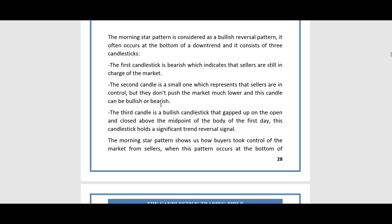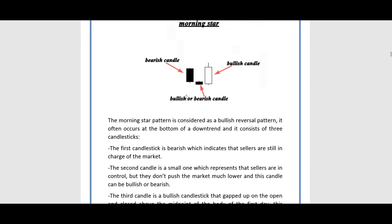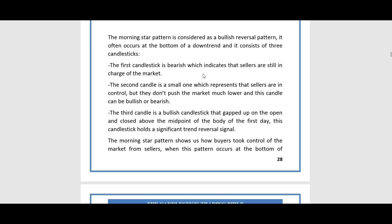The second candle can be bullish or bearish — the candle in between the first bearish and final bullish can be either; it doesn't matter. So although this is a morning star, that middle candle doesn't have to be bearish, it could be a bullish candle as well. The most important thing is that the two end candles are opposing or opposite candles.